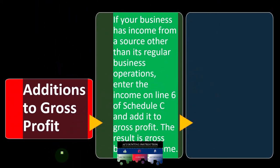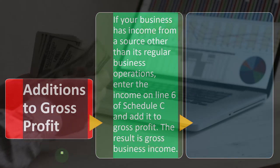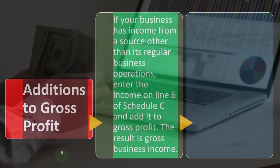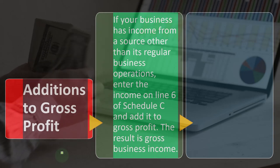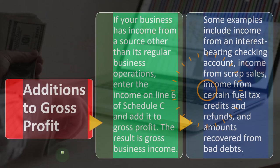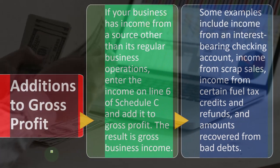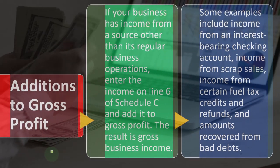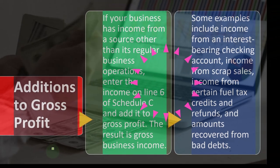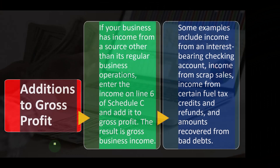Additions to gross profit: if your business has income from a source other than regular business operations, enter the income on line six of Schedule C and add it to gross profit — the result is gross business income. Examples include income from an interest-bearing checking account, income from scrap sales, income from certain fuel tax credits and refunds, and amounts recovered from bad debt.